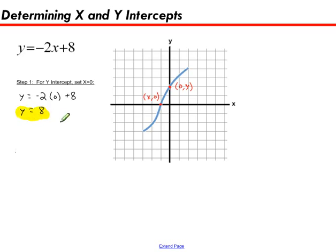So let's do the x intercept. For the x intercept we use the same trick. We just set the y value this time equal to zero because we're solving for a point where y will always be zero. So I'm going to set y to zero and set the rest just like it is: negative 2x plus 8.